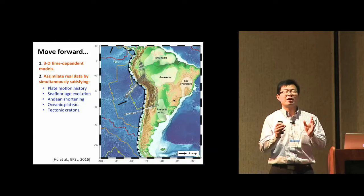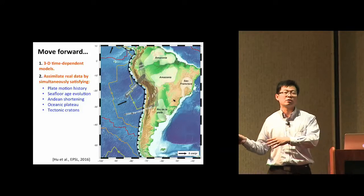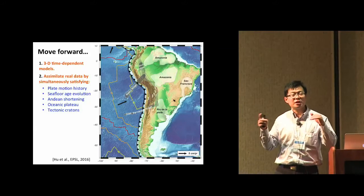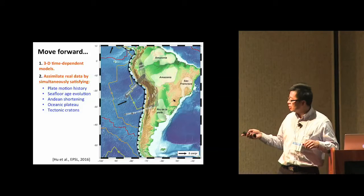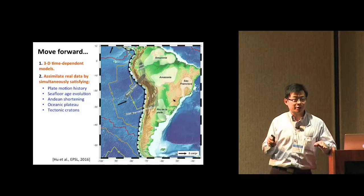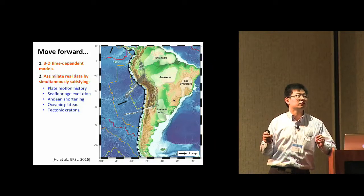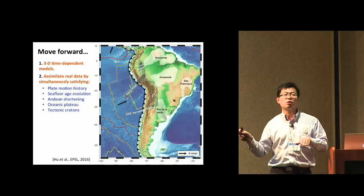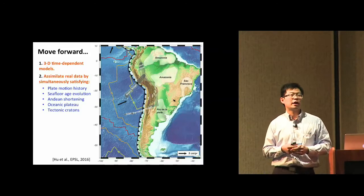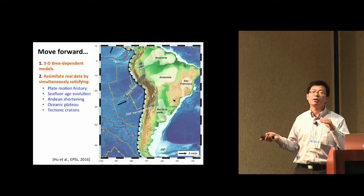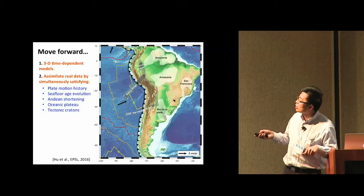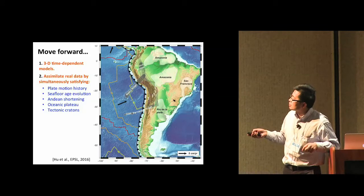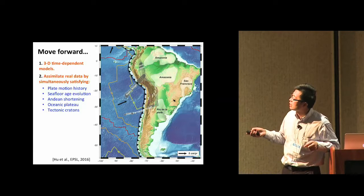When we run the model from initial conditions, we simultaneously assimilate a lot of data into the model. This is similar to weather prediction — we assimilate many observational constraints so the model cannot deviate from true physics, and eventually the model becomes predictive. In this particular case we include in the model the plate motion history — each plate moving in different directions at different speeds.